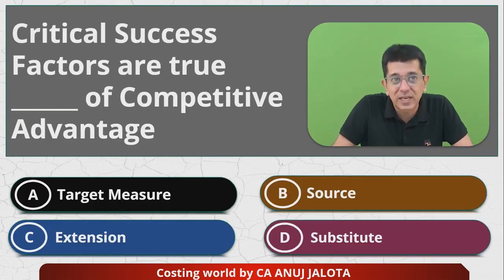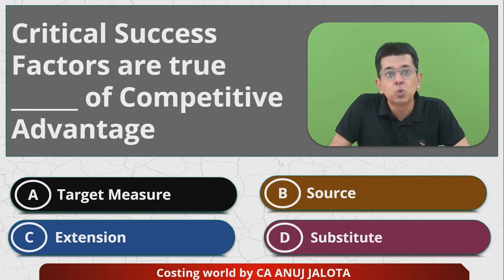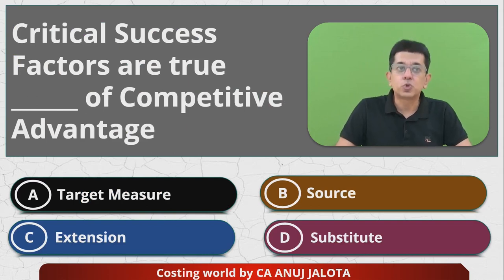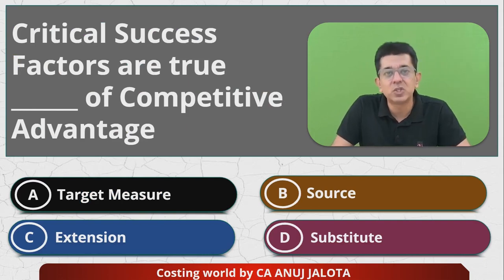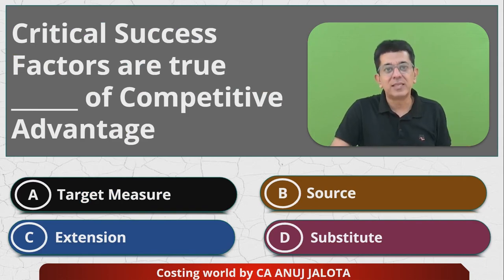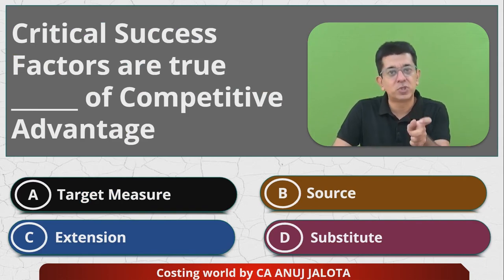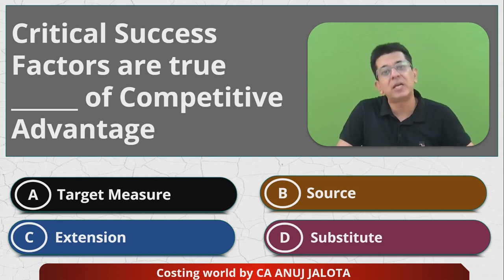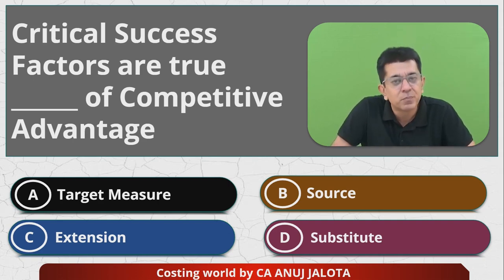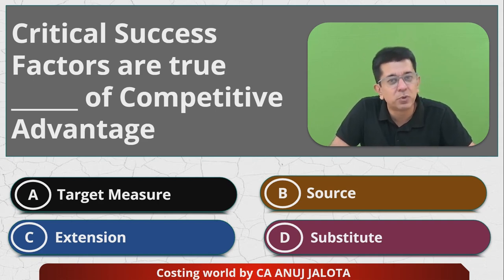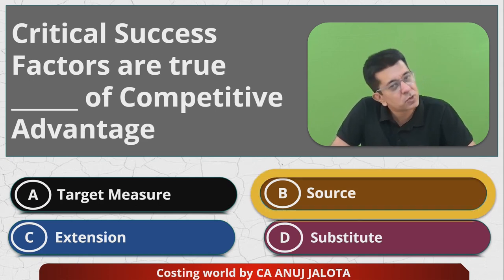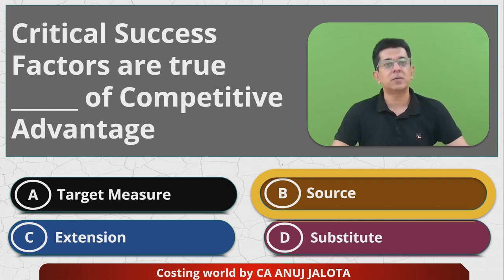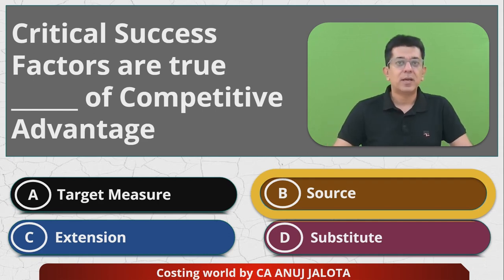So the question is: critical success factors are the true ___ of competitive advantage. If you want to have competitive advantage, try to achieve some objectives — these objectives emerge from the competitive advantage you would like to have. Out of the four answers A, B, C, and D, the answer should be B — that is 'source.' Thank you. I will see you all next time. Bye. Take care, and happy studying.